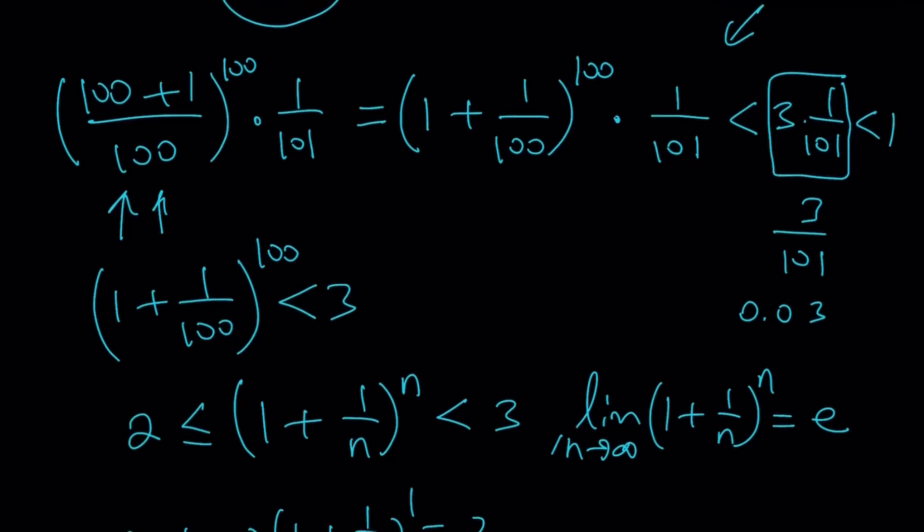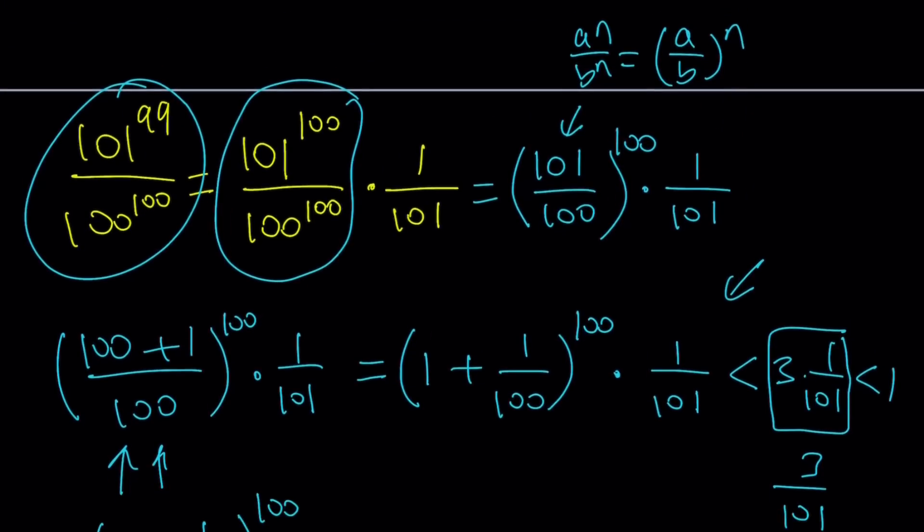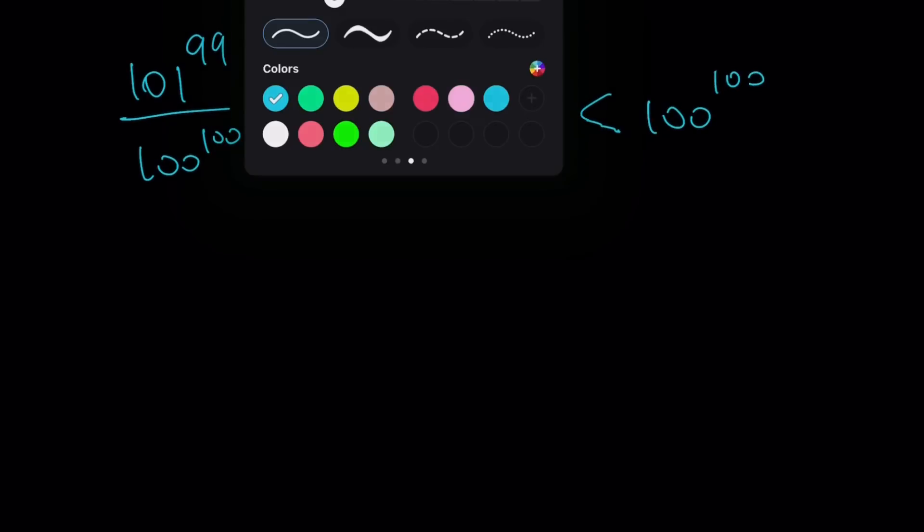So that implies the following. I started off with something like this, and we happened to find that it's less than 1. 101 to the 99 divided by 100 to the power of 100 is less than 1. Since both the top and the bottom numbers are positive, we can go ahead and cross multiply. We get 101 to the 99 is less than 100 to the power of 100.